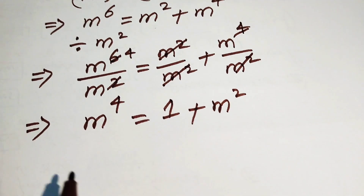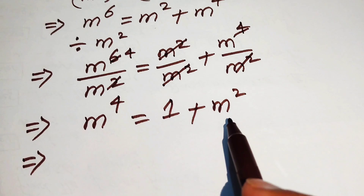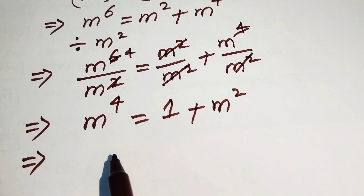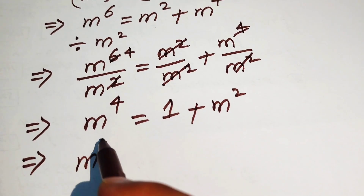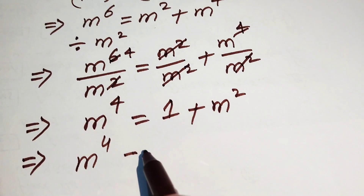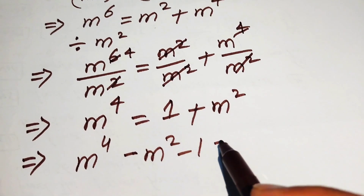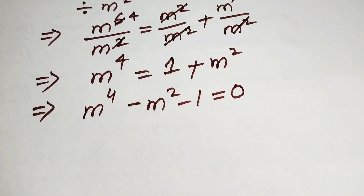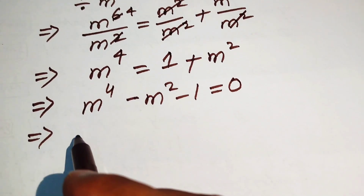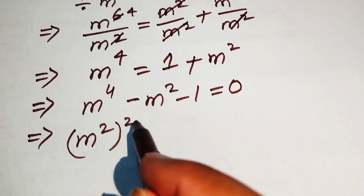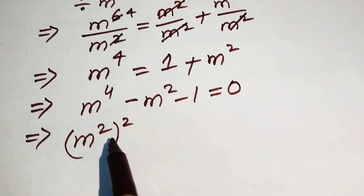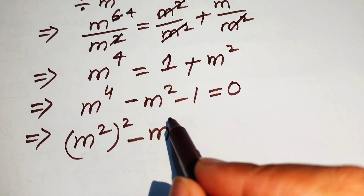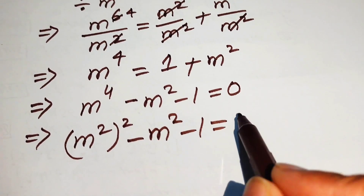We rearrange the terms, moving 1 plus m² to the left-hand side. This gives us m⁴ minus m² minus 1 equals 0. We now need to convert this fourth-order equation into quadratic form, rewriting m⁴ as (m²)².